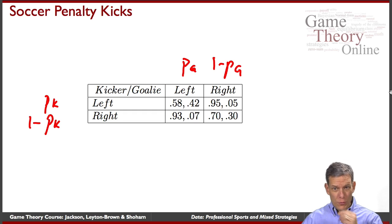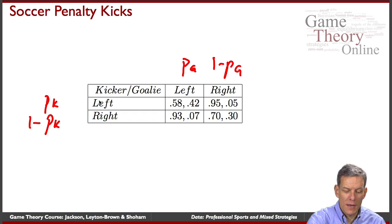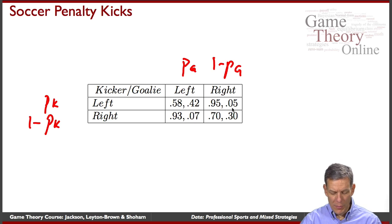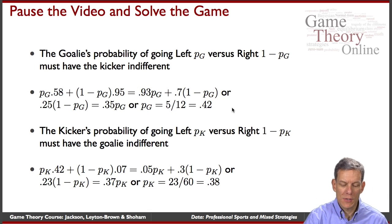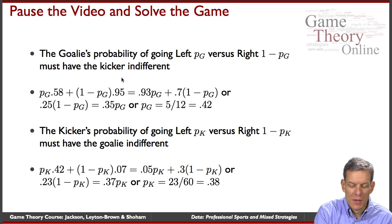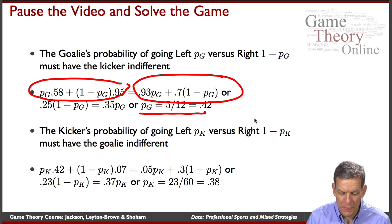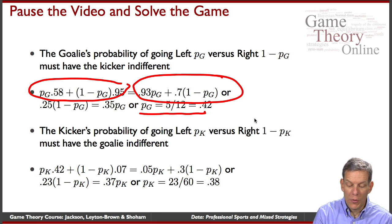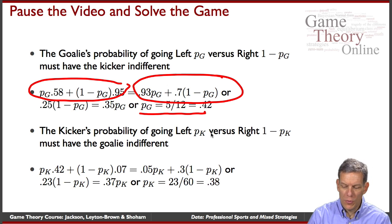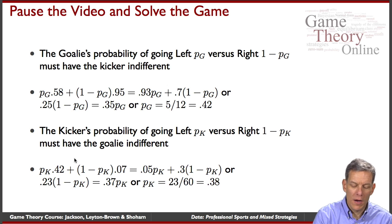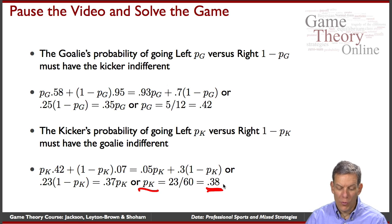Now let's see what's actually happening in this game. We need P_G to make the kicker indifferent. If the kicker kicks left, we figure out their payoff; if they go right, we figure out their payoff. The goalie's probability of going left versus right must leave the kicker indifferent. Setting the kicker's payoff from going left equal to going right, P_G is roughly 5/12, or 0.42. Similarly, setting the goalie indifferent between left and right, P_K — the probability the kicker goes left — is 0.38.